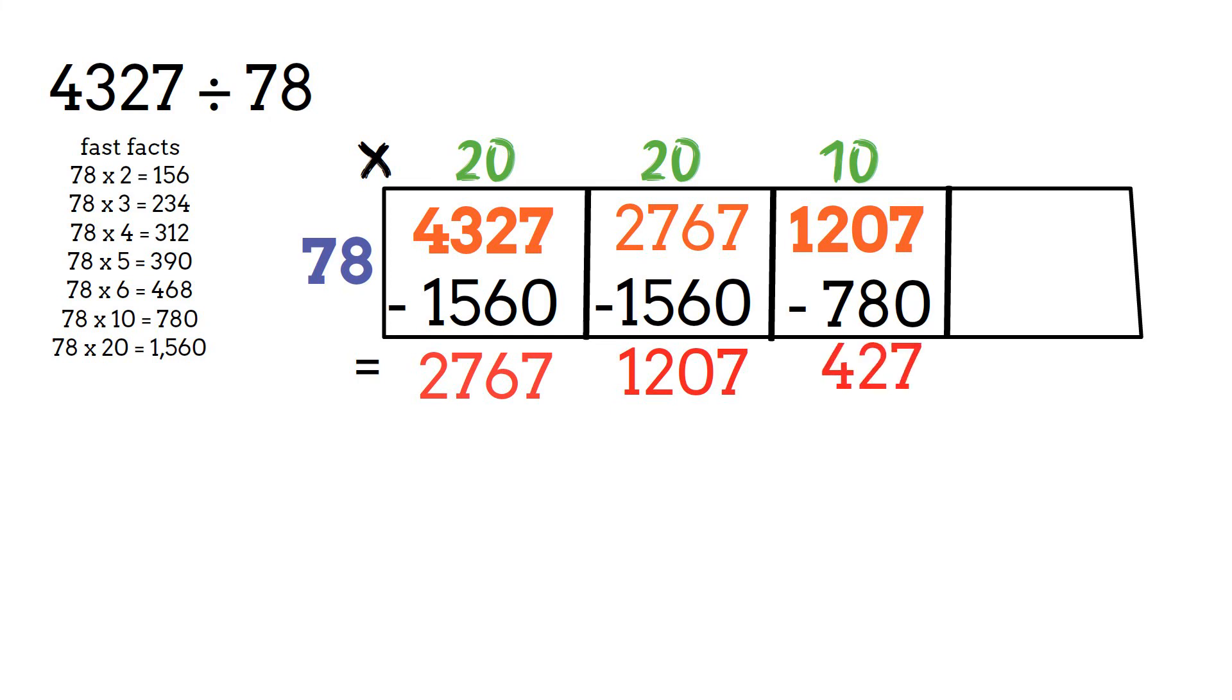78 goes into 427 five times. We do one more subtraction and we have 37 left over.